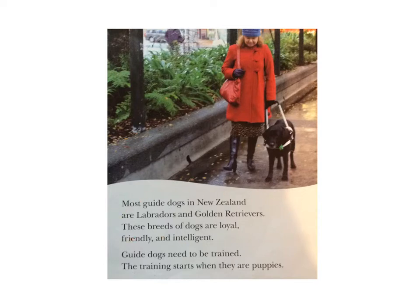Now let's read the next paragraph. Guide dogs need to be trained. The training starts when they are puppies. So this paragraph is different ideas — it's not about the kind of dogs that are guide dogs anymore. It's about them needing to be trained and when that starts. Because they're different ideas, they're put into different paragraphs.